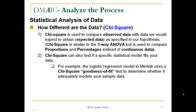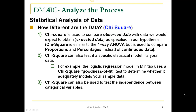For example, the logistic regression model in Minitab uses a Chi-Square goodness-of-fit test to determine whether it adequately models your sample data. Chi-Square can also be used to test the independence between categorical variables, and we'll look at an example of this at the end. The formula for Chi-Square is: Chi-Square equals the sum of the observed minus the expected, squared, over the expected.